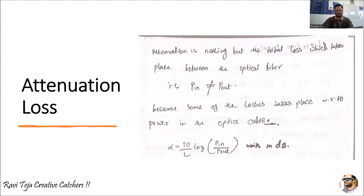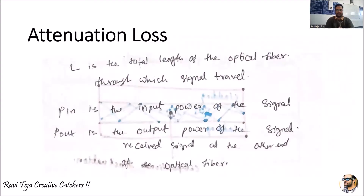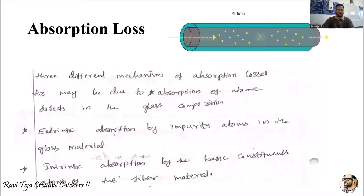Here, L is the total length of the optical fiber cable over which the signal travels from point A to point B. P-in is the total input power when the signal enters the optical fiber cable, and P-out is the output power received at the receiver end. Due to attenuation loss, the input power P-in is not equal to the output power P-out received at the output end.